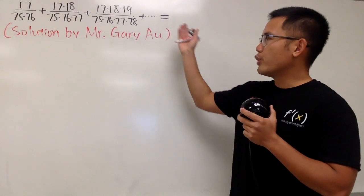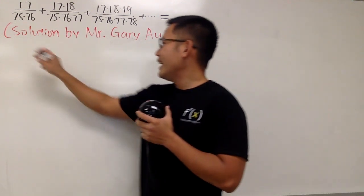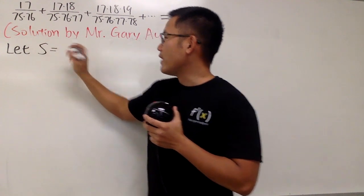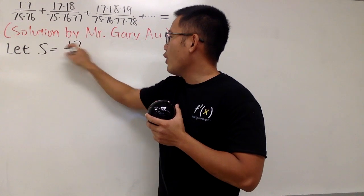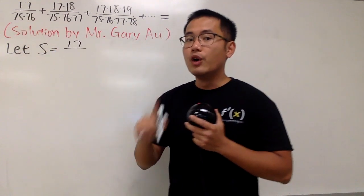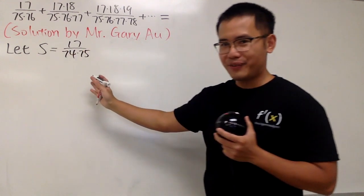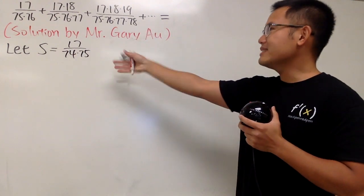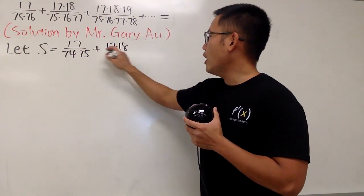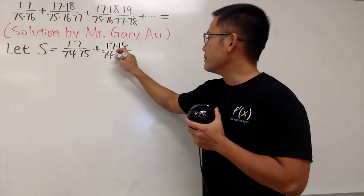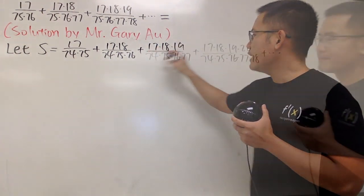Anyway, here we go. First, you can just do a quick comparison and show that this right here does converge, so the following is actually legit. Anyway, we start by saying that S equals the following sum, not the original though. Instead of looking at 17 over 75 times 76, we will be looking at 17 over 74 times 75.